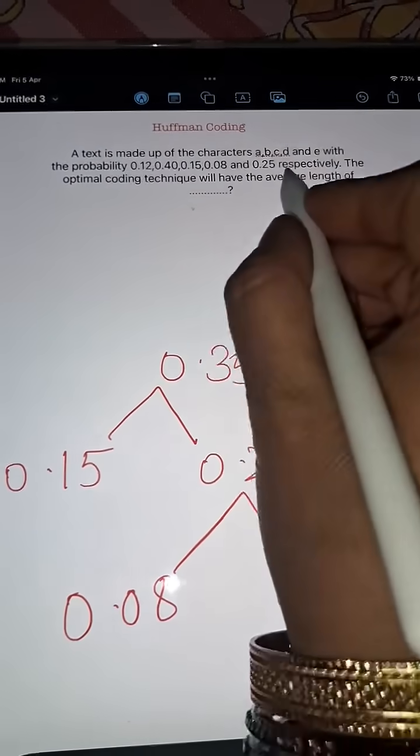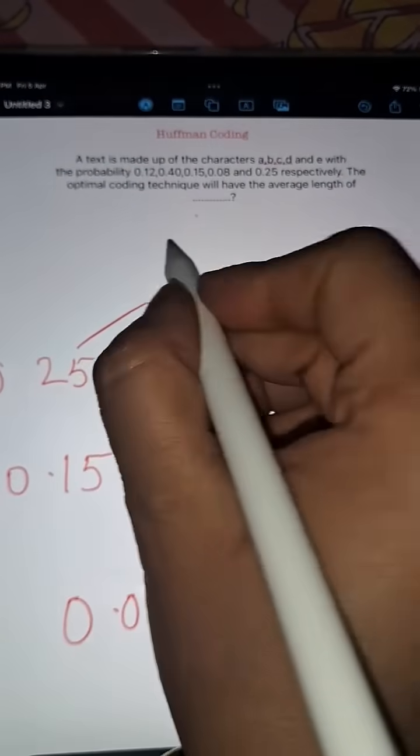Now which one is the next one? 0.25, so note it down 0.25 and add this up. It will give you 0.60.